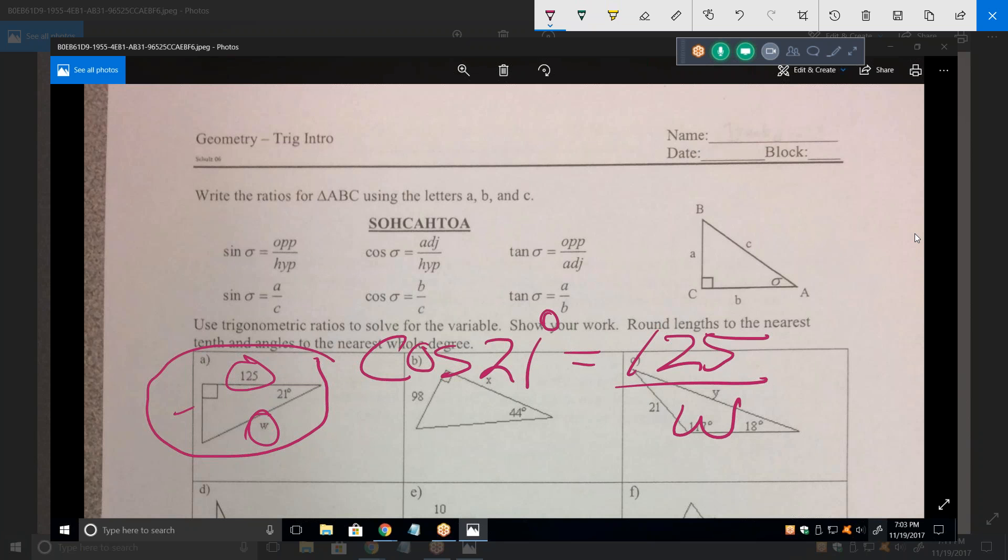In other words, the cosine of 21 degrees is equal to 125 over W. Now, cosine of 21 degrees is a number, always. You look it up in your calculator. And so, in other words, I'm going to replace that with a number and I can solve for W. W is going to be 125 divided by the cosine of 21 degrees. What kind of calculator do you use, Brandon?